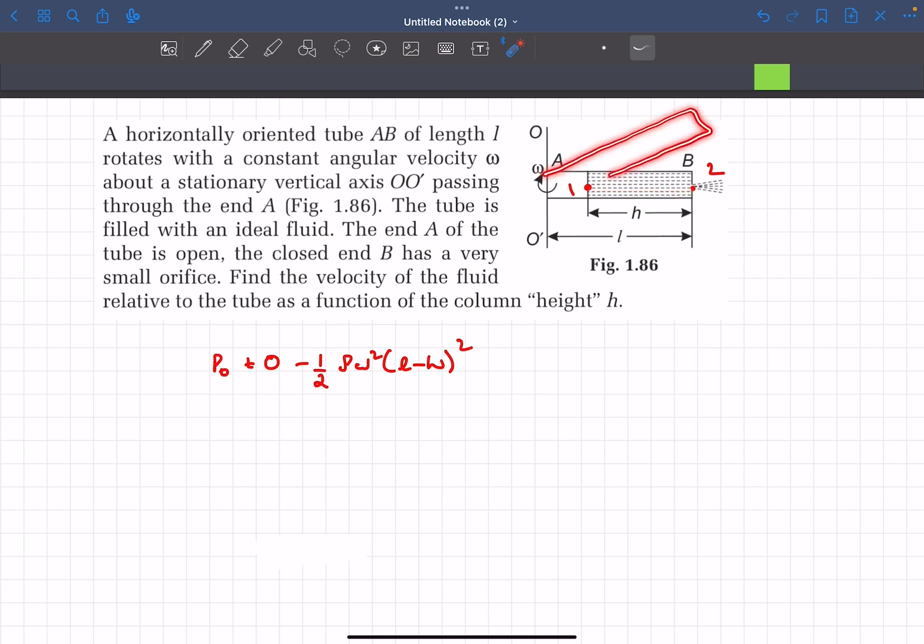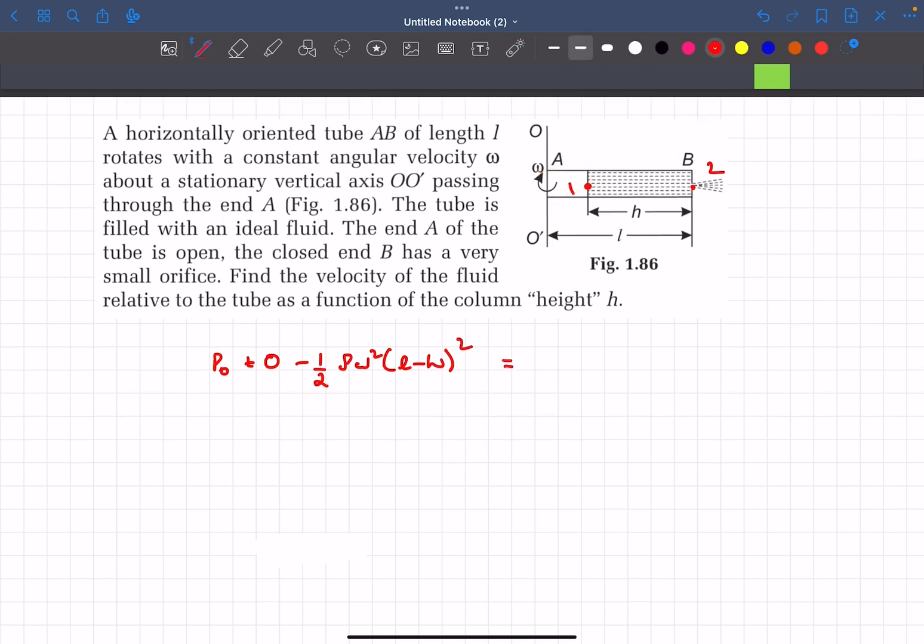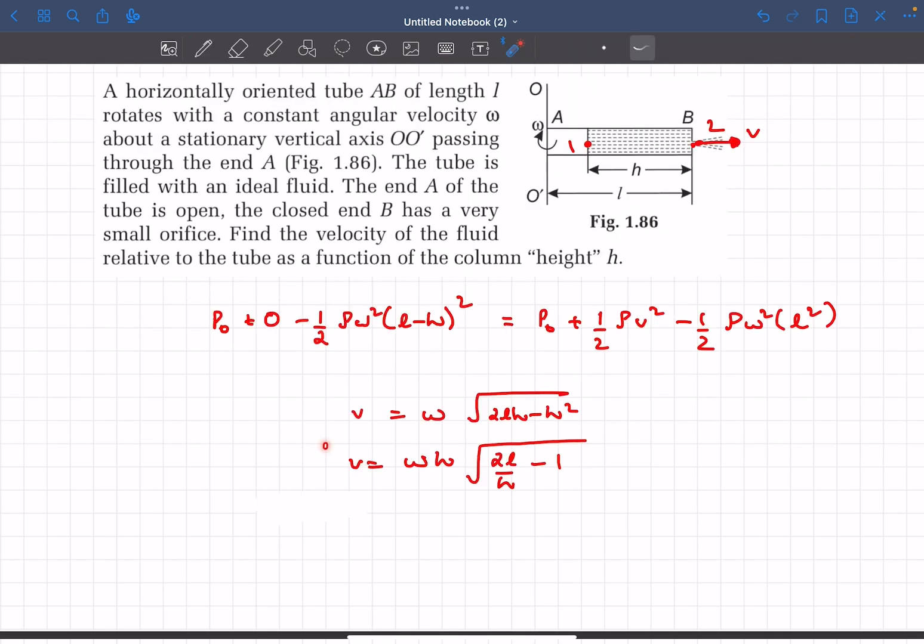If the rod were tilted at some angle theta, you'd have to also consider the work done by gravity. This equals the pressure at n2, which is p_0 as well since it's exposed to the atmosphere. We'll consider the relative velocity as v plus half rho v square minus half rho omega square l squared. After solving, you'll obtain the velocity as this particular value.